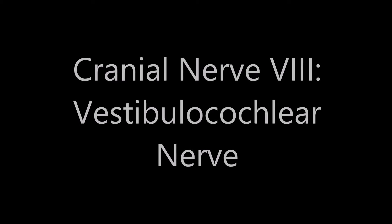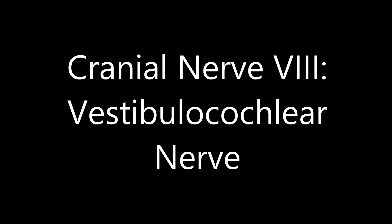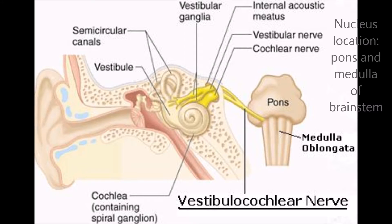Cranial nerve 8, the vestibular cochlear nerve. The nucleus of the nerve is located in the pons and medulla of the brainstem.